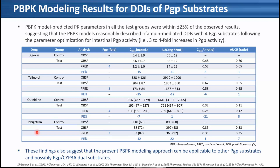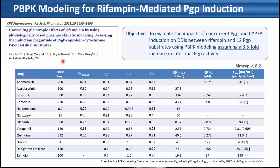Now I'd like to talk about the second paper, a collaboration with Simcyp and AstraZeneca. Our main objective was to evaluate the impact of concurrent P-gp and CYP3A induction on DDI between rifampin and 12 P-gp substrates, including dual substrates, using PBPK modeling. In this paper, we assumed a 3.5-fold increase in P-gp activity without running additional sensitivity analysis, fixing it at 3.5-fold.